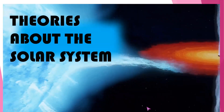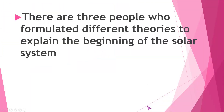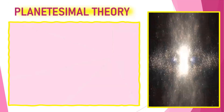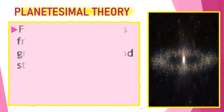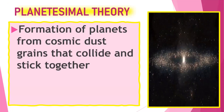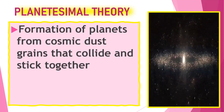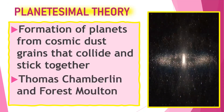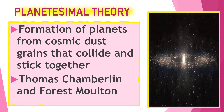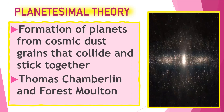So, in the different theories about the solar system, let us see the ideas. There are three people who formulated different theories to explain the beginning of the solar system, and the three theories suggest different studies about the early history of the creation of the solar system. The first one is the planetesimal theory. It says that the formation of the planets from the cosmic dust and grains colliding and sticking together formed the solar system. And those ideas come from Thomas Chamberlin and his partner, Forest Moulton.